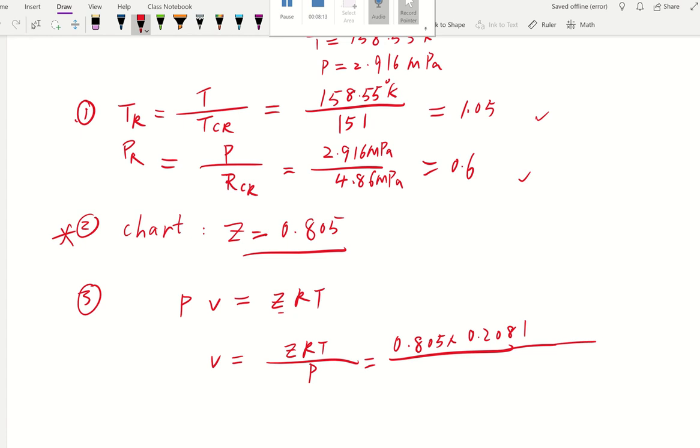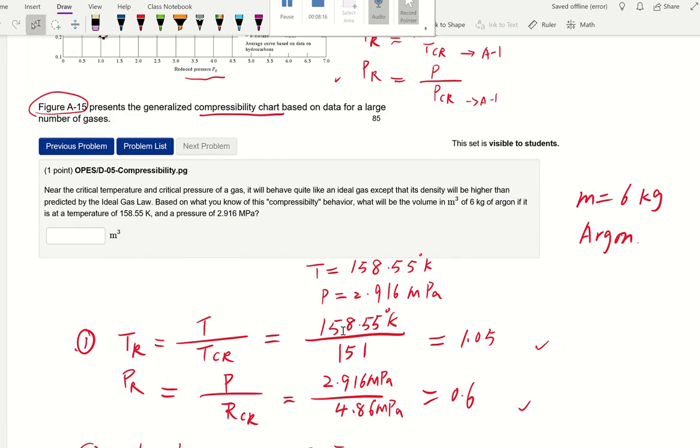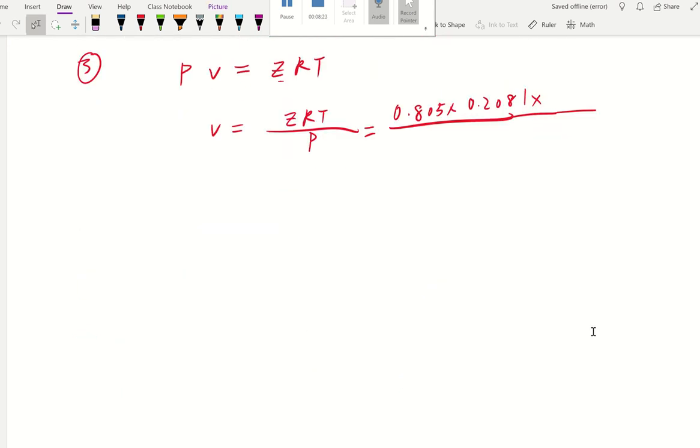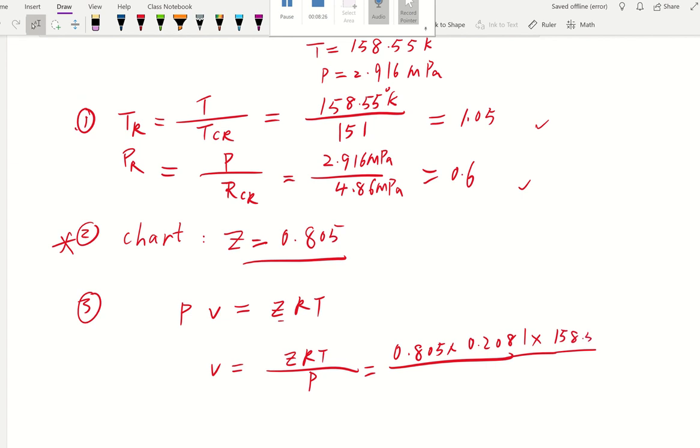Then our, that's our R. And what's our given temperature? Our given temperature, it is 158.55K. Then our given pressure is in that many megapascal. You want to change to, we're going to change to kilopascal because that's the number we're using. Why? Because R here is in kilojoule per kilogram per kelvin, right? And so with kilojoule, we're going to change this megapascal to kilopascal. That's 2,916 kilopascal.